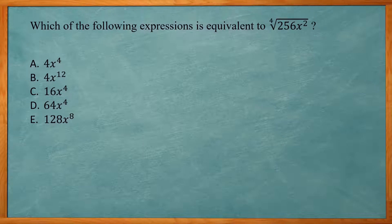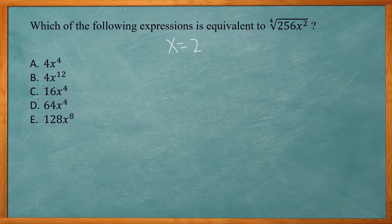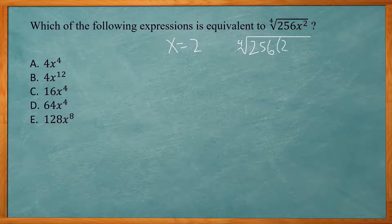This one says which of the following expressions is equivalent to the fourth root of 256 times x squared. Again, I want to choose a number for x to plug in. I'm going to set x equal to 2, something nice and easy, and I'm going to set up the fourth root of 256 times 2 squared.